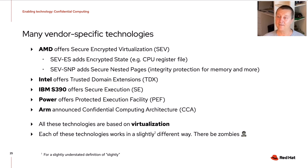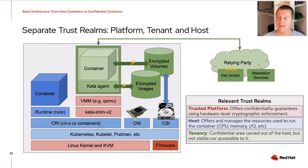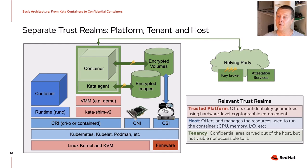There will be a number of challenges when integrating these technologies into Kata containers. Let me explain the concept of separation of trust realms between the platform, tenant, and host. The trusted platform offers confidentiality guarantees using hardware-level cryptographic enforcement. The host manages the physical resources used to run the container — CPU, memory, disk, networking, and so on. The tenant's security realm includes a confidential area or enclave carved out of host resources that the host cannot see or access. This security realm also includes things outside the host, such as a key broker to offer keys to guests, attestation services, and container image download services.